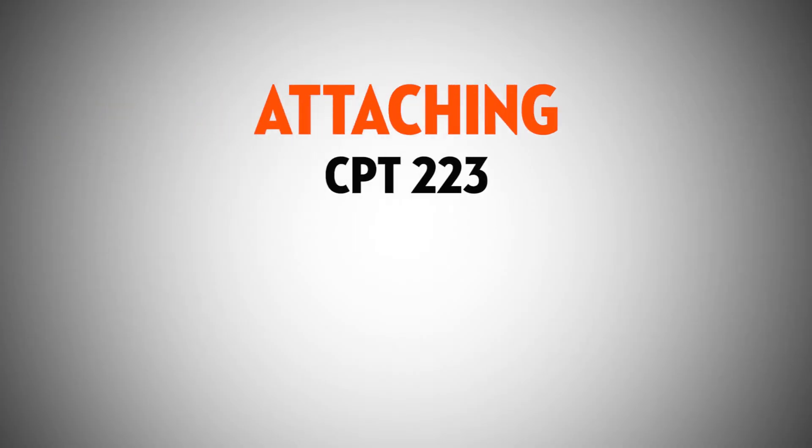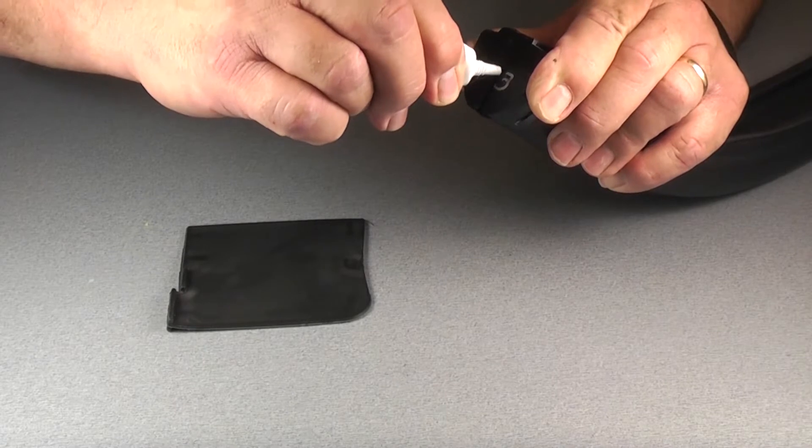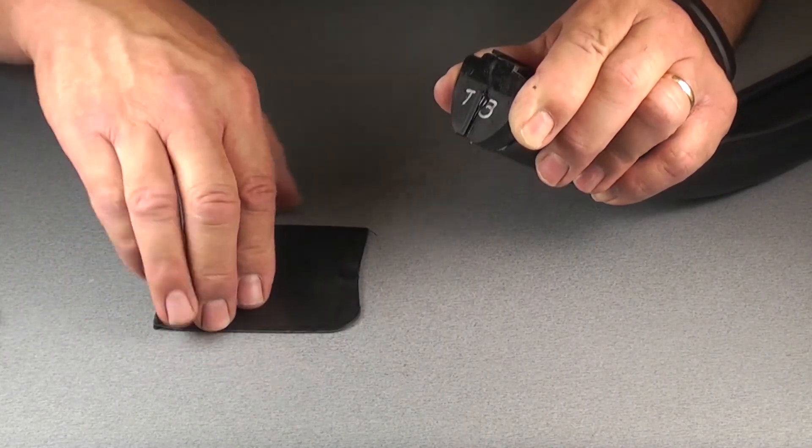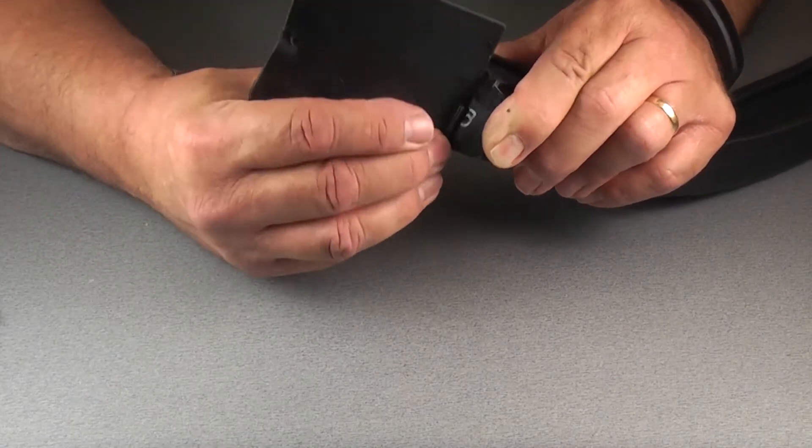The CPT-223 model offers the option of attaching side flaps to the end of the sensing edge, which serves as a weather seal for rolling steel door applications. Add a small bead of glue into the end plug guide and insert the slide flap into position.